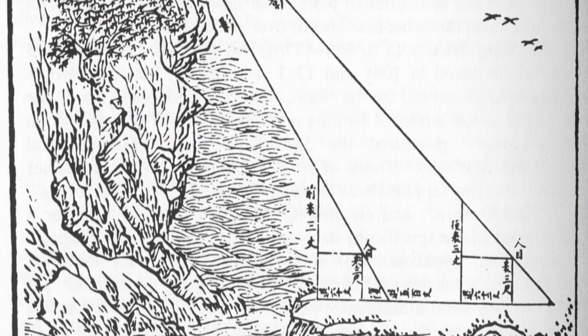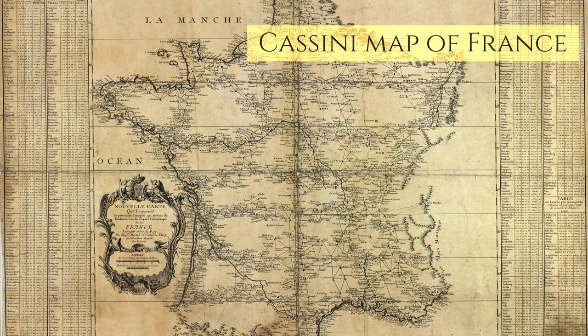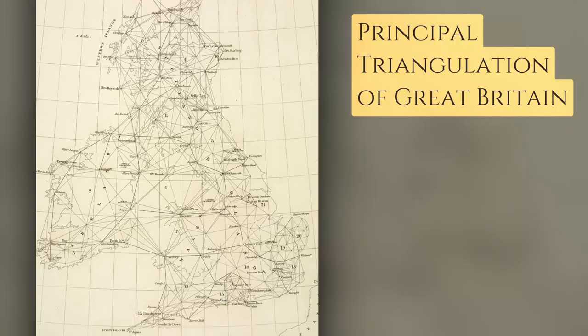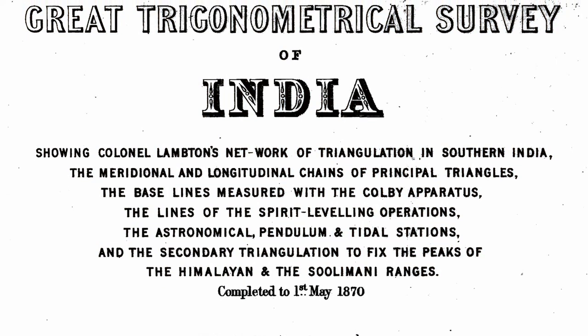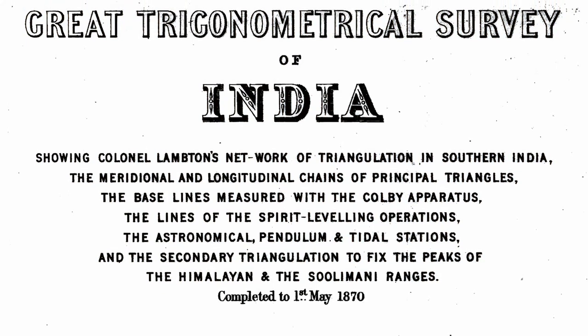That sort of error is way too big to handle in actual cartography. We have been using triangulation for centuries — most notable examples being the Cassini family map of France, the Principal Triangulation of Great Britain, and the Anglo-French survey.